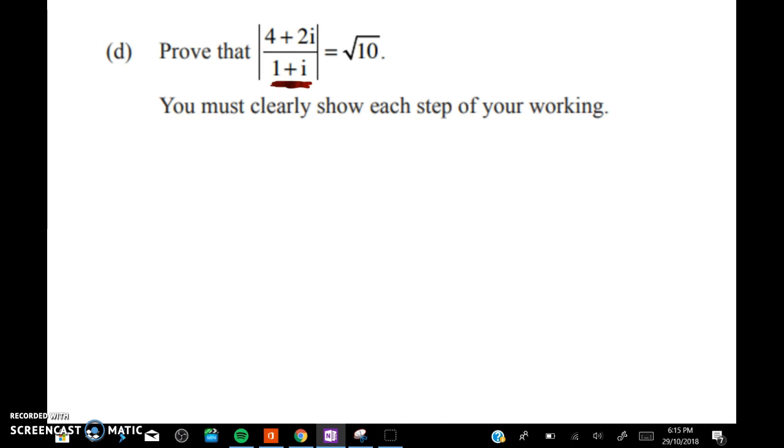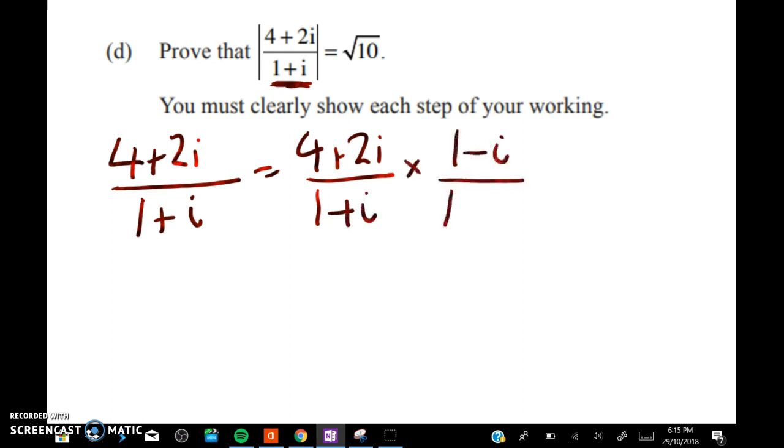I'm going to start by simplifying the complex number. So we'll start like this: 4 plus 2i over 1 plus i is equal to that times the conjugate over the conjugate to rationalise the denominator.